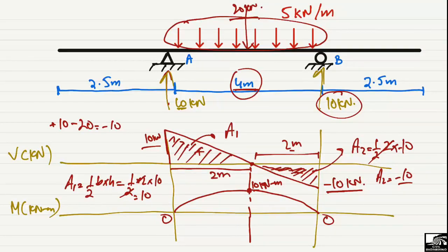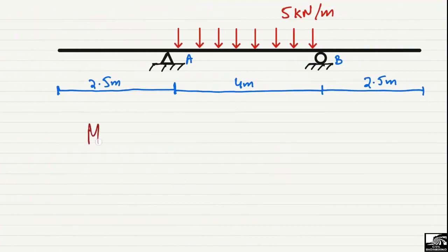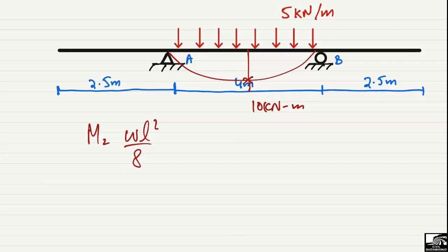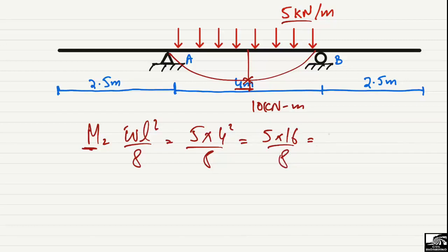We can verify the maximum bending moment of 10 kN·m using the formula M_max = wL²/8 for a uniformly distributed load. Here, w = 5 kN/m and L = 4 m, so M_max = 5 × 4² / 8 = 5 × 16 / 8 = 80 / 8 = 10 kN·m. This confirms that the maximum bending moment at the midpoint is 10 kN·m.